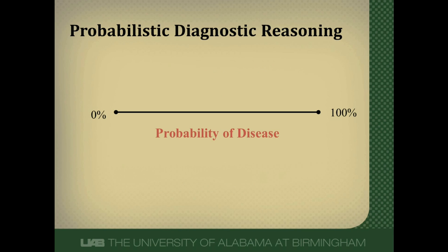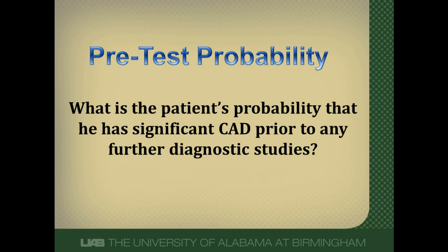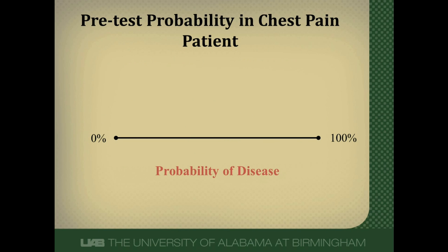One concept that the remainder of this video will be based upon is this continuum of disease probability, from 0% chance of having a disease up to 100% chance of having disease. Our patients can fall anywhere along this continuum. Pre-test probability is the first step we'll have to determine in the diagnostic process — it's the chance that the patient has a given disease prior to doing any further studies. Because our patient has chest pain and we're considering coronary artery disease, I indicate that pre-test probability along the continuum with an X. I put it pretty high because this patient's characteristics are fairly consistent with the diagnosis of coronary artery disease, though I'm not 100% sure.